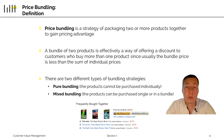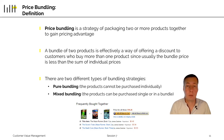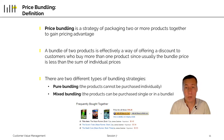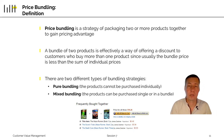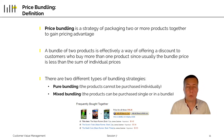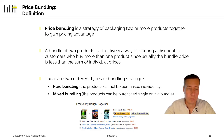There are two different types of bundling. There's pure bundling, where the products cannot be purchased individually — think of your credit card, where you cannot buy just the card without the insurance; they only go together. And there's mixed bundling, where the products can also be purchased individually — think of Amazon when they sometimes recommend two books that you can buy together instead of only one.